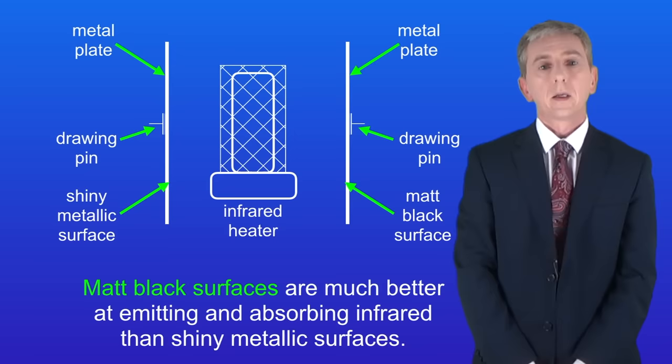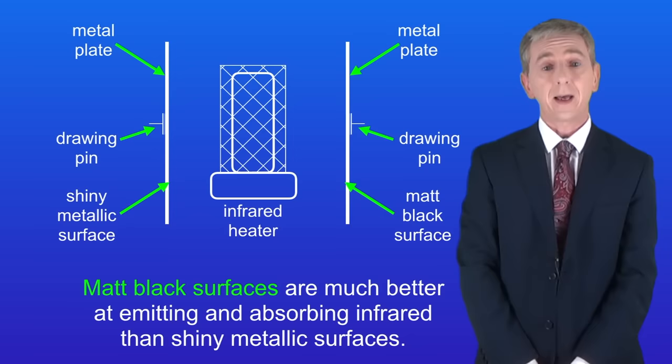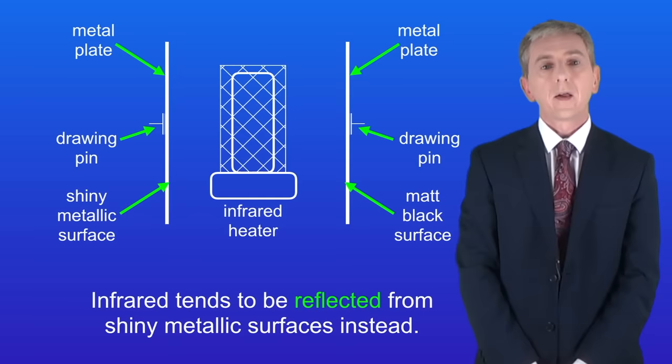As we've seen, matte black surfaces are much better at emitting and absorbing infrared than shiny metallic surfaces. In fact, infrared tends to be reflected from shiny metallic surfaces. Remember, you'll find plenty of questions on this required practical in my revision workbook, which you can get by clicking on the link above.